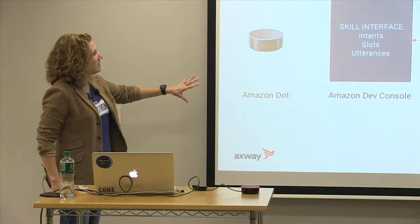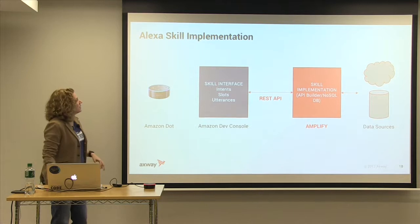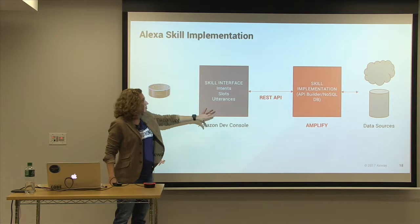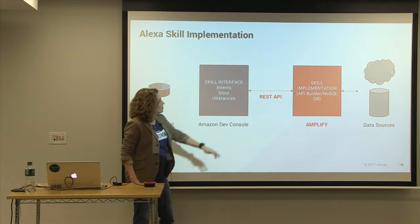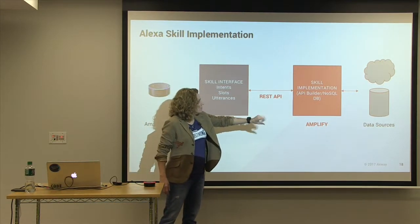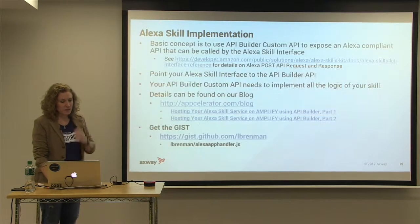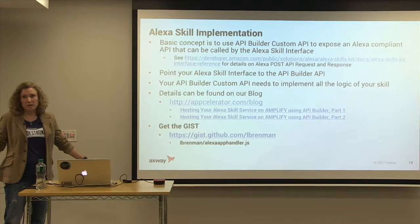This is our implementation: we have the Amazon Dot and you'll be able to use the test client in the Amazon developer console. We're going to define the skill, implement it using API Builder, and leverage a NoSQL database. We're going to build a basic hello world Alexa skill leveraging API Builder. The basic concept is to use a custom API to expose an Alexa-compliant service. You can go to developer.amazon.com to view what the interface is - it will ask for the endpoint where our implementation is, and we paste in the ngrok URL where our API Builder implementation lives.